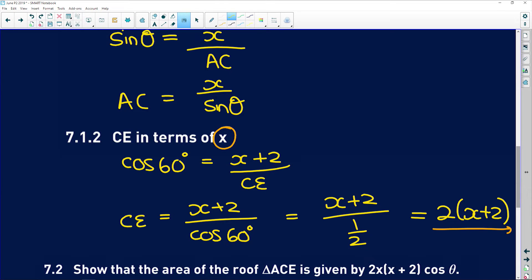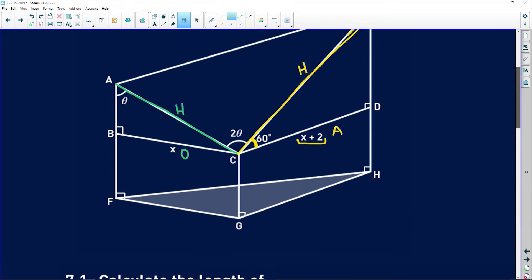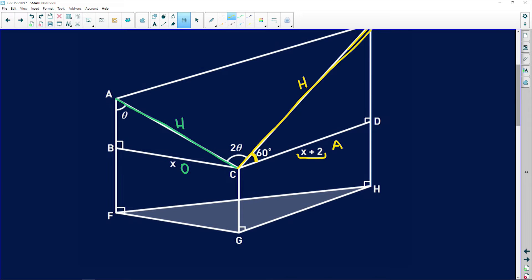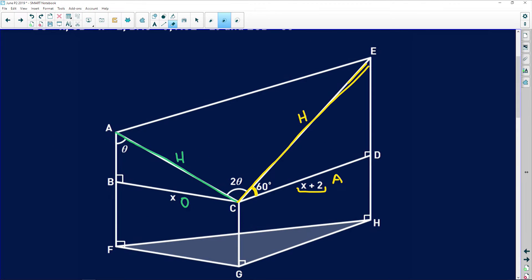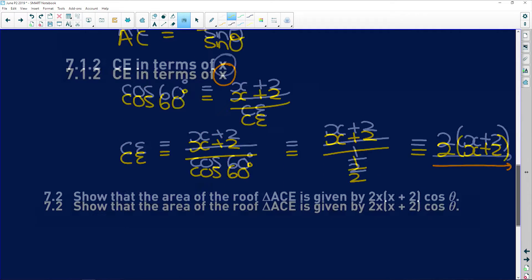Okay, so let's actually fill these in. AC we found was x over sine θ, and CE we've just found is 2 into x plus 2. So let's carry on.